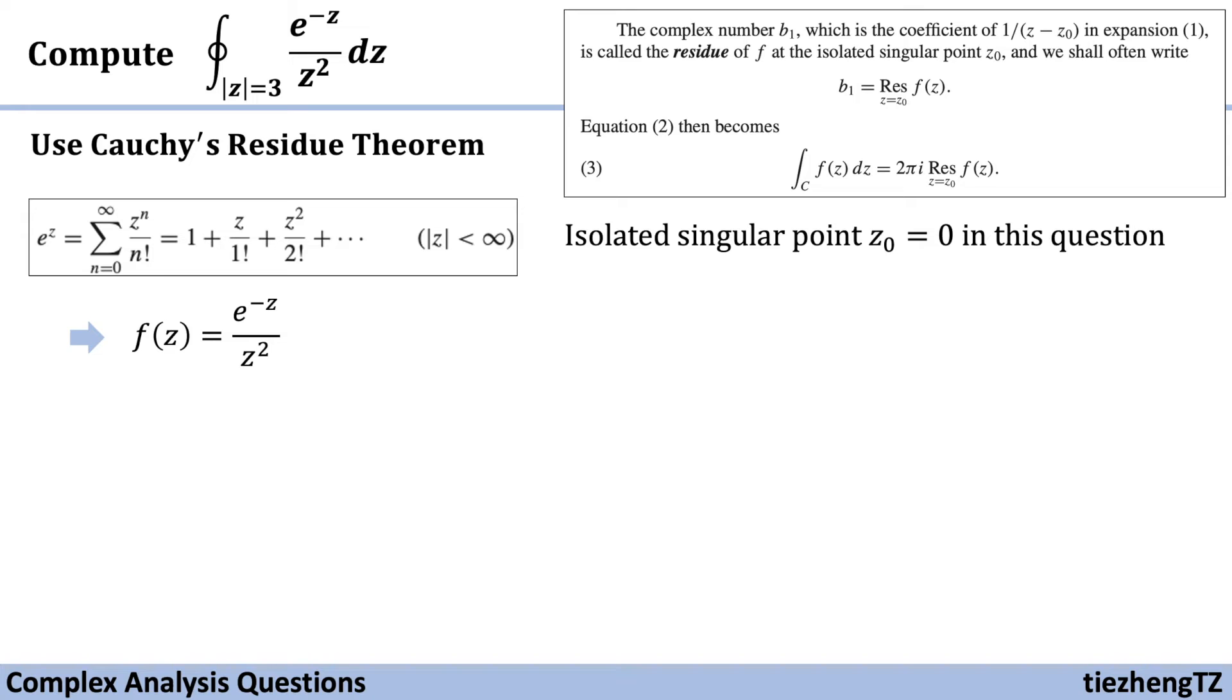This is 1/z² times the sum from n=0 to infinity of (-z)^n/n!. If we move the 1/z² within the sum, it becomes the sum from n=0 to infinity of (-1)^n·z^(n-2)/n!.